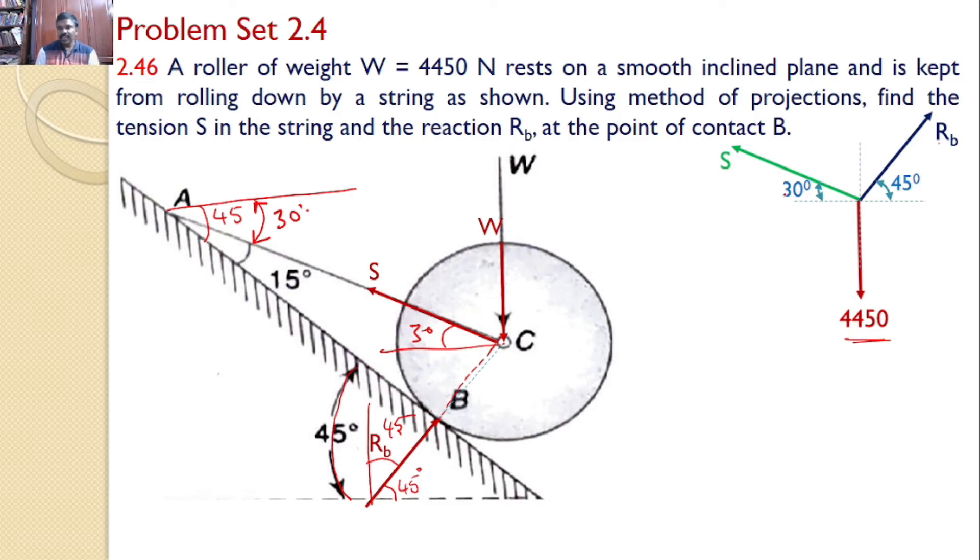Let us divide these forces along their components, x and y components. The first force is vertical force 4450, which need not be resolved because it is a vertical force. Rb makes an angle 45 degrees with the horizontal.